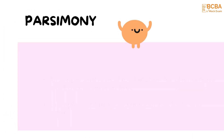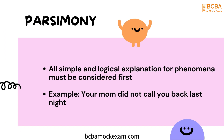Sixth, parsimony. It's the principle that the most acceptable explanation of an occurrence, phenomenon, or event is the simplest, involving the fewest entities, assumptions, or changes. Simply put, all simple and logical explanations for phenomena must be considered first. For example, there is a simple explanation for why your mom did not call you back last night.